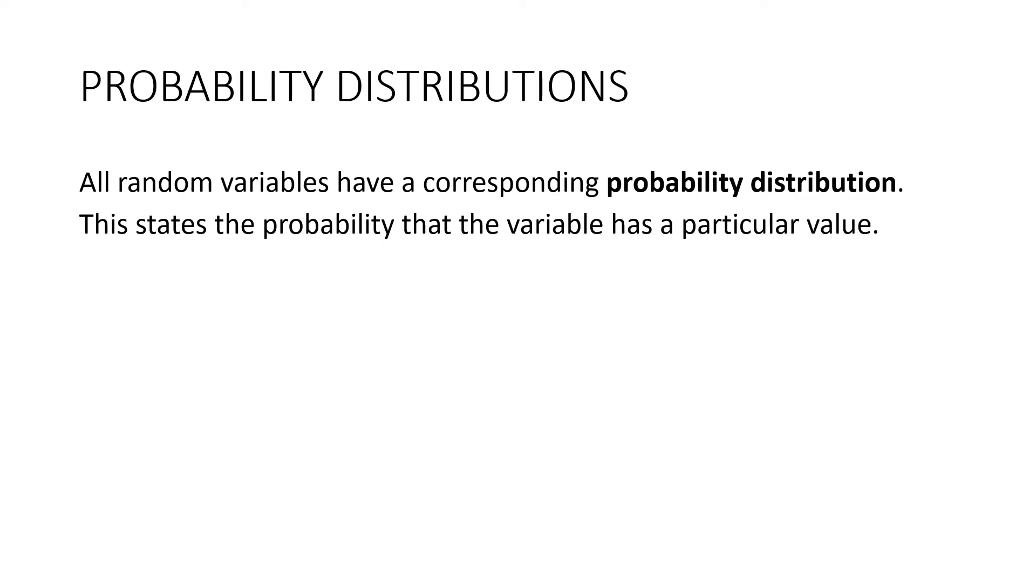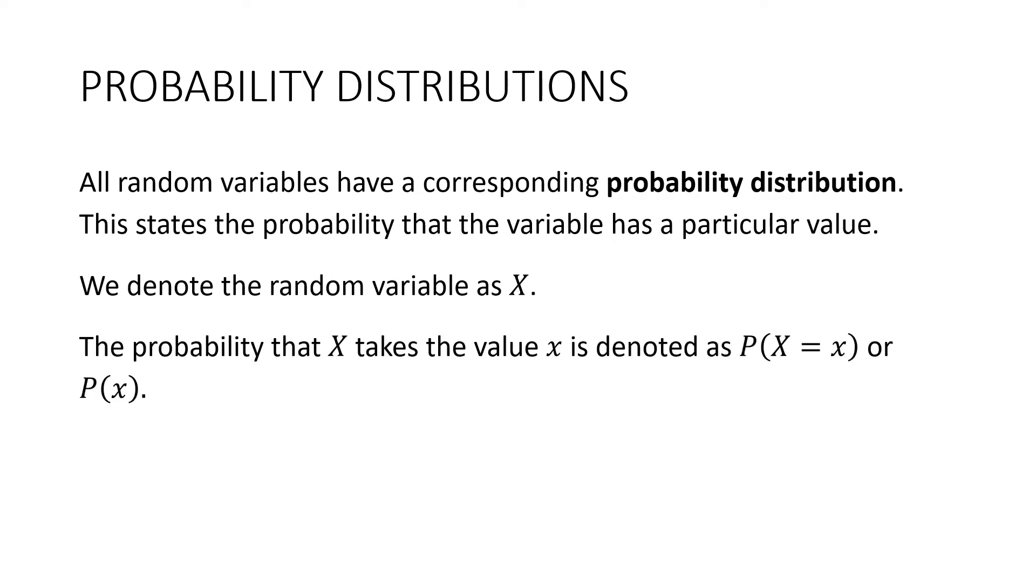Now, all random variables have a corresponding probability distribution, and this is just the probability that the variables take the different values. So we denote the random variable as capital X, and this is what we write. The probability that X is equal to some particular value. We can shorten it like this, which you're more used to.